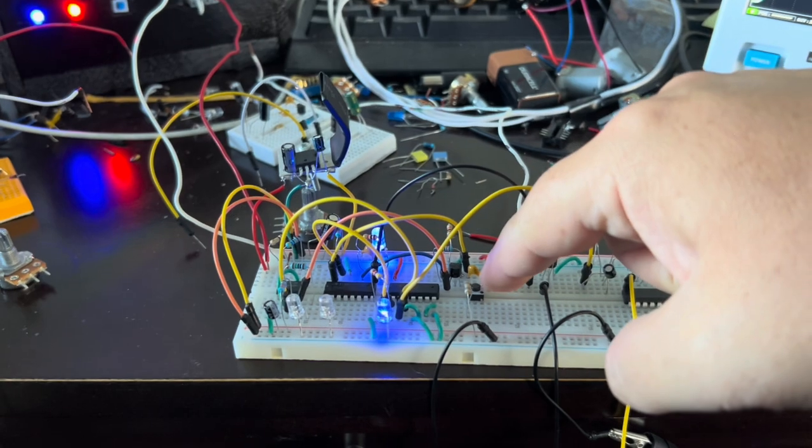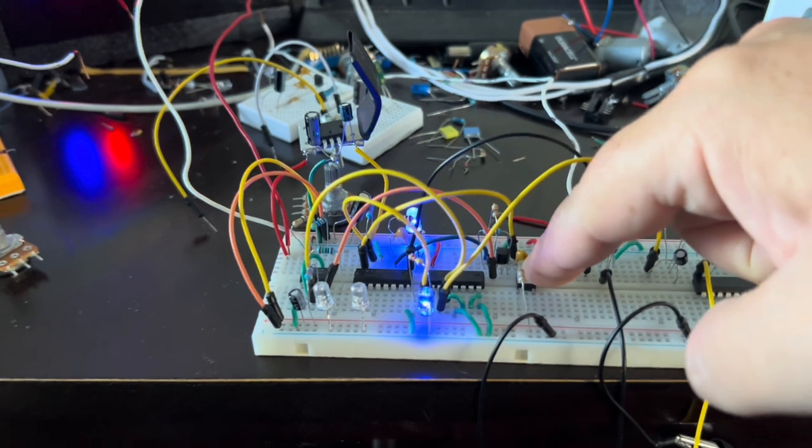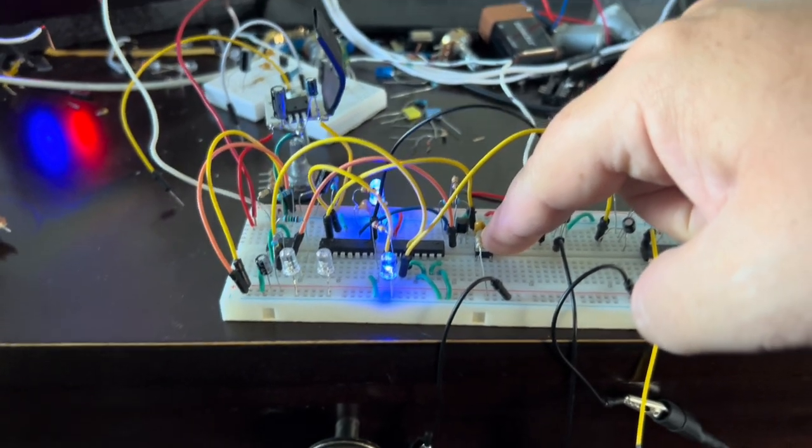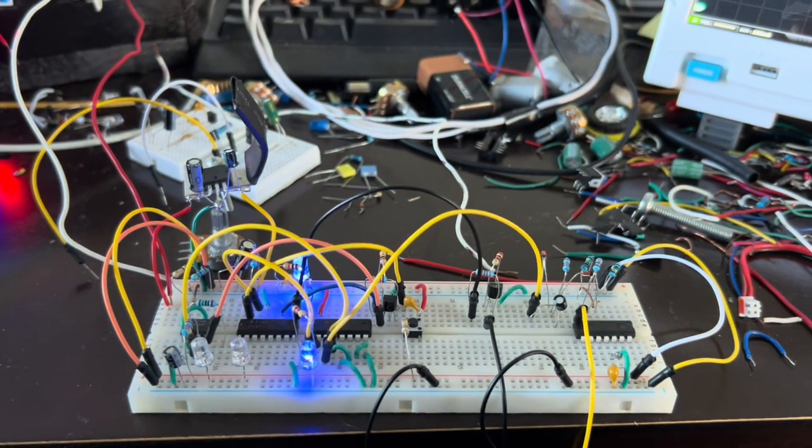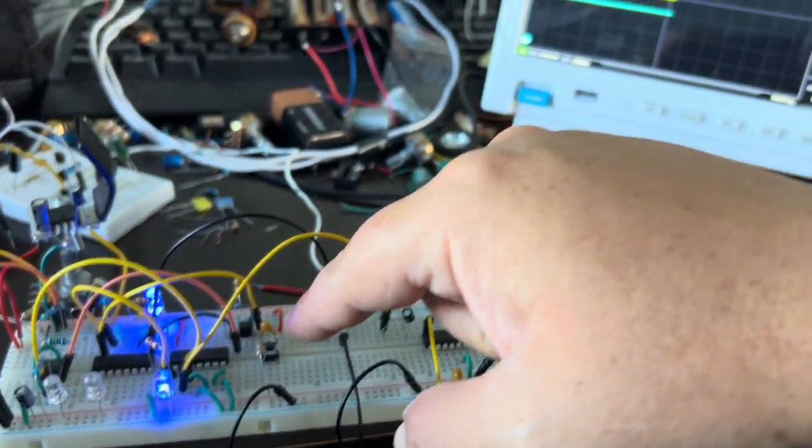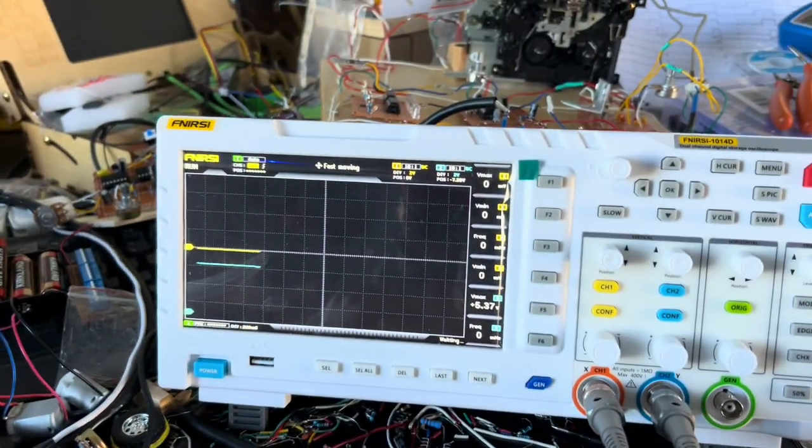I sped it up a little bit with a smaller capacitor at the 555 timer. I put a 0.1 microfarad capacitor there. So now when I press it, it gives you nine beats just like that. Here's what it looks like.